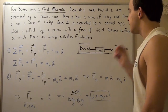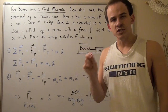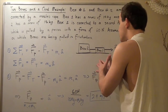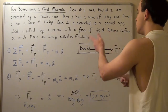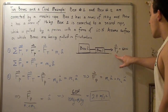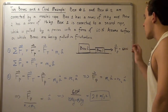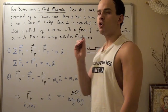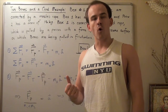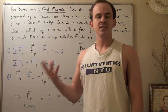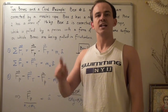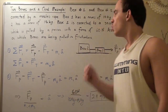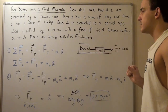Now we want to find what the acceleration is of the following system. How quickly does this system, consisting of box 1 and box 2, accelerate when a force of 60 Newtons is applied? We know according to the second law of motion that if we apply a net force to a system, that system will begin accelerating. That's exactly what we want to find — the acceleration of the system.